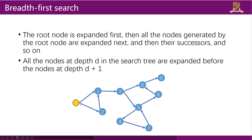Let's look at a BFS example. Start from node 0 — it has two children node 1 and node 2, so we visit them first. Then node 1 has a child node 3, so we visit it. Similarly we find node 6, node 4, node 8, and finally the goal.